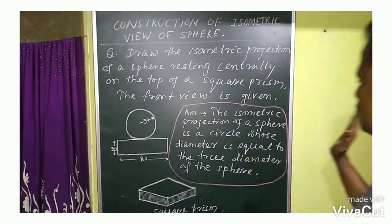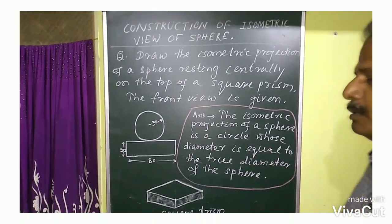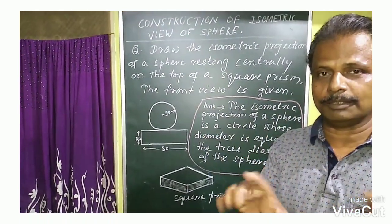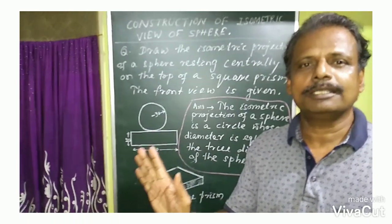This is a circle whose diameter is equal to the true dimension of the sphere. The isometric scale is less than the length, but the true length is equal. The true length and the isometric length both are equal.